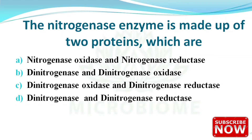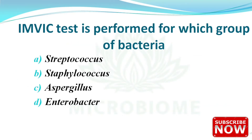The options for the nitrogenase enzyme components are: nitrogenase oxidase and nitrogenase reductase; dinitrogenase and dinitrogenase oxidase; dinitrogenase oxidase and dinitrogenase reductase; or dinitrogenase and dinitrogenase reductase. The correct answer is option D — dinitrogenase and dinitrogenase reductase.